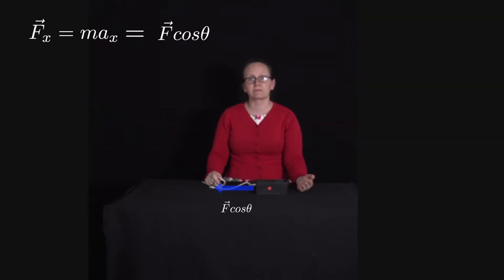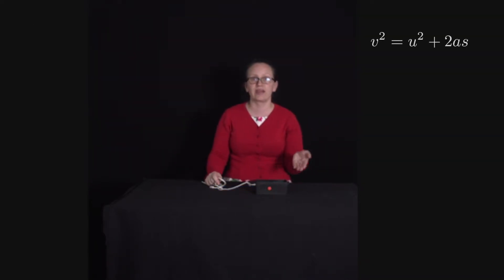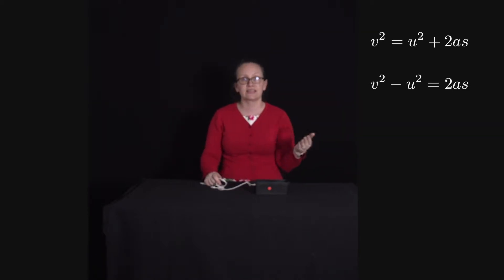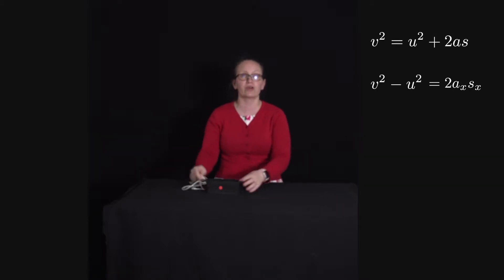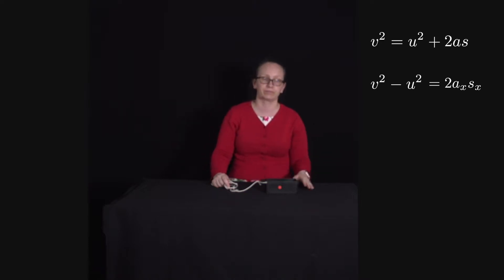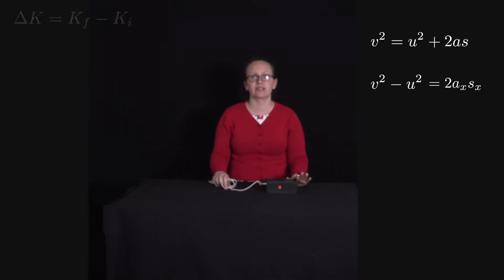Considering our kinematic equations, we have V squared equals U squared plus 2AS. Rearranging gives V squared minus U squared equals 2A_x S_x, where the acceleration and displacement are both in the X direction. The change in kinetic energy equals the final kinetic energy minus the initial kinetic energy. The delta symbol denotes change, and we always calculate change as the final value minus the initial value.